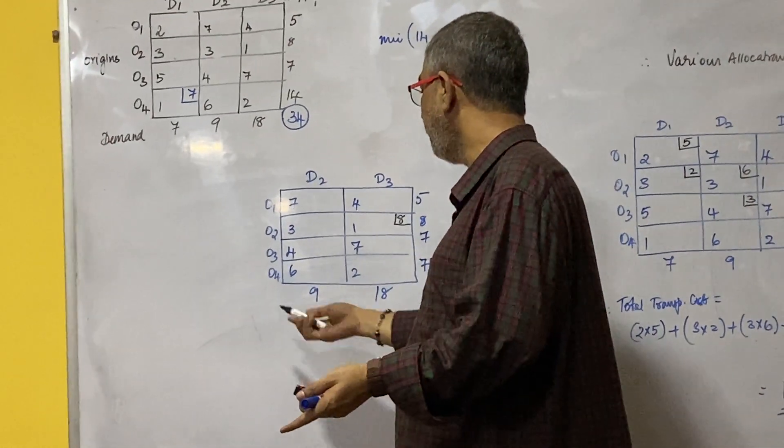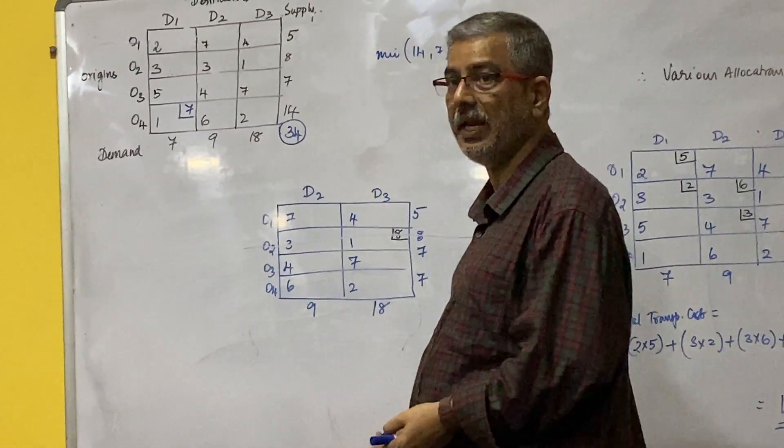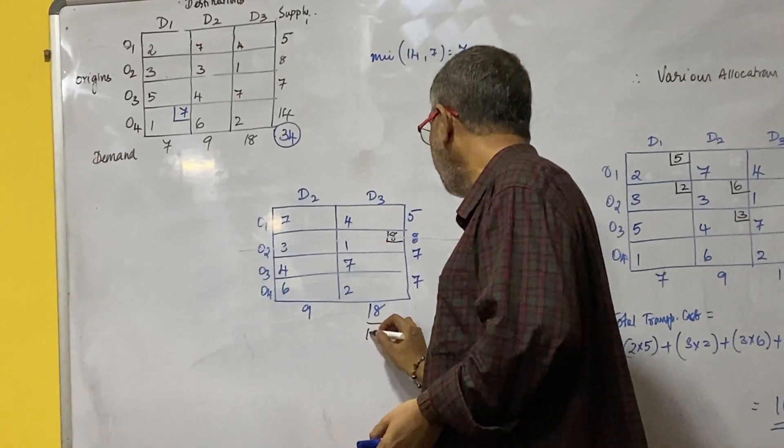Which row will get deleted? This row will get deleted and accordingly over here it will be 10.